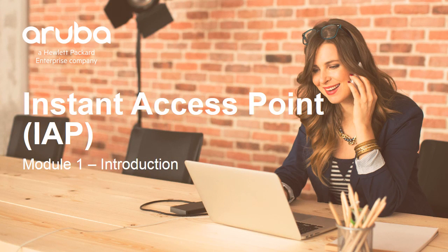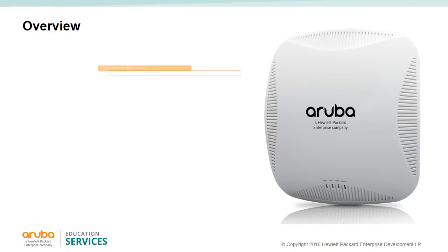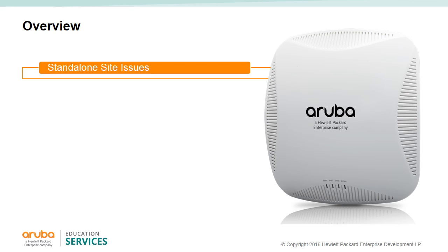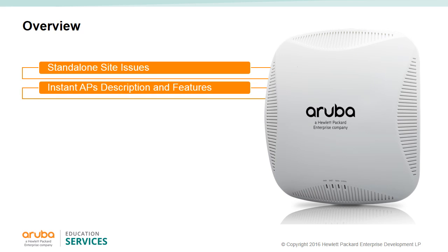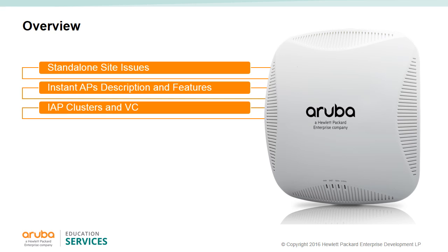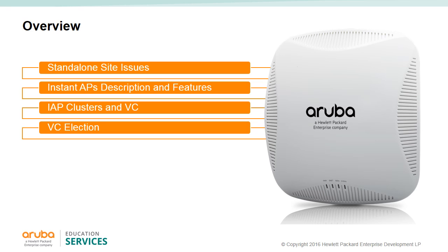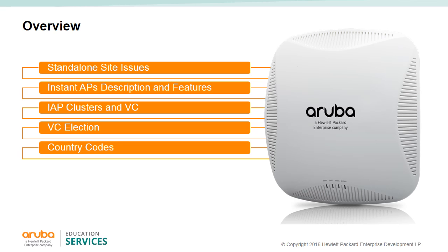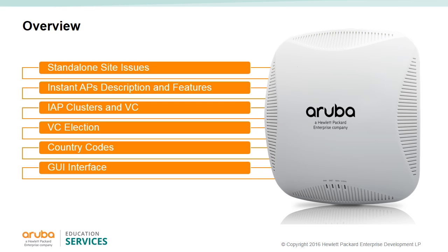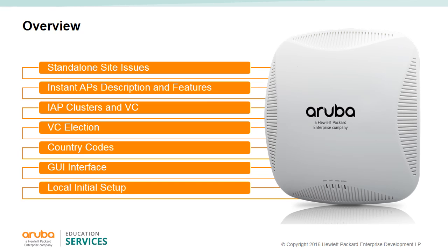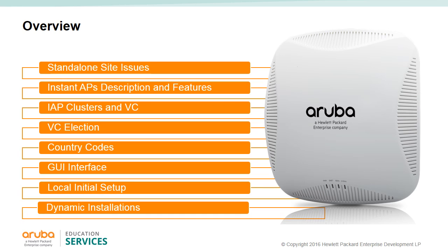Module one: Instant Access Point introduction. In this first module we will look at the standalone site issues, Instant AP descriptions and features. We will look at an IAP cluster and the virtual controller, the virtual controller election process, country code selections, a small introduction to the GUI interface, the local initial setup, and dynamic installation.